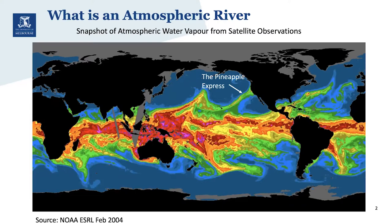Coming off this band of strong water vapour in the tropics are these narrow streamers, and these narrow streamers are what we call atmospheric rivers. They're responsible for about 90% of moisture transport between the tropics and the equator. A single atmospheric river transports more water than the Amazon River, and there are about five to six of these weather systems on the globe at any one time.